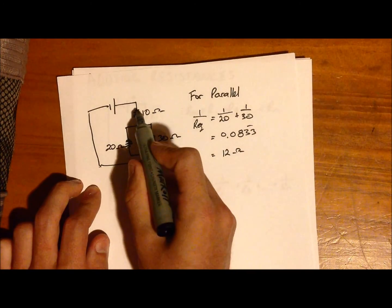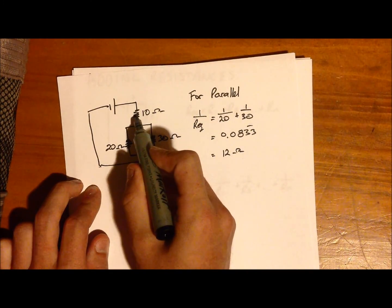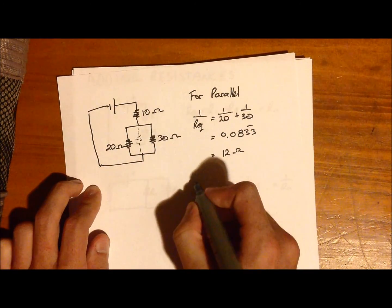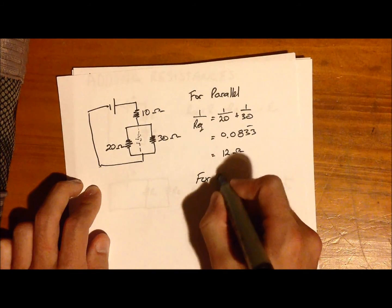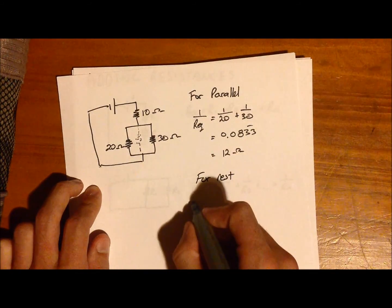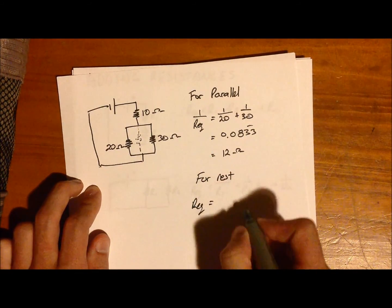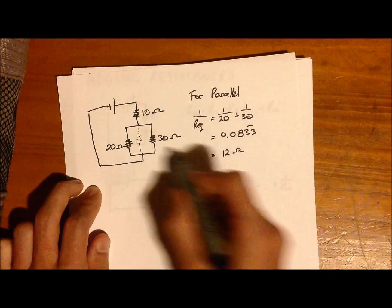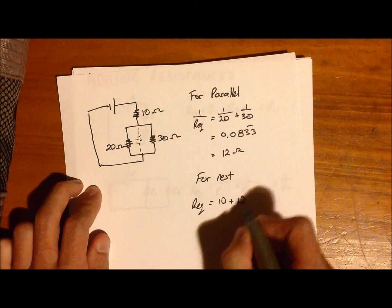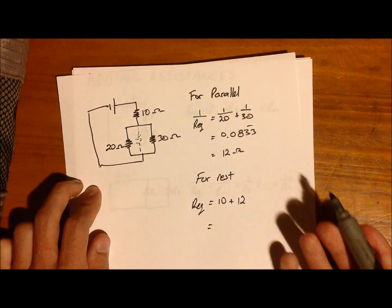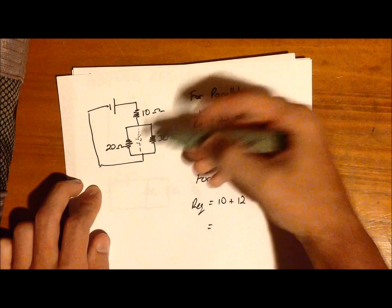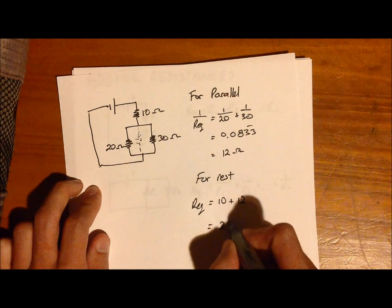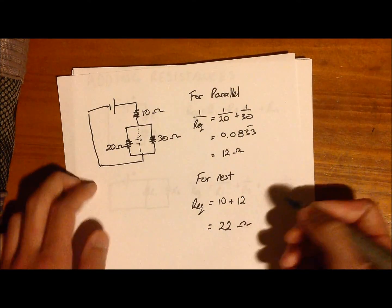So to add it to the series, for the rest, the equivalent is just equal to 10, plus what we just figured out, which is the 12. So this means that the equivalent resistance of the entire circuit is equal to 22 ohms.